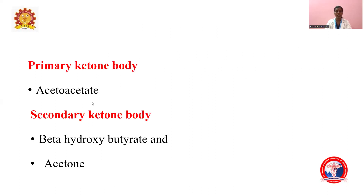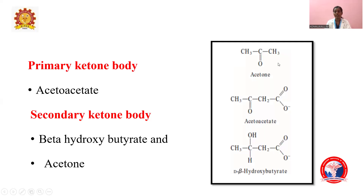Among the three, the primary ketone body is acetoacetate. The secondary ketone bodies are beta-hydroxybutyrate and acetone — they are called secondary because they are not directly formed from the substrate, but rather from the breakdown of acetoacetate. Looking at their structures, acetone and acetoacetate both have a keto group, whereas beta-hydroxybutyrate does not have a keto group.